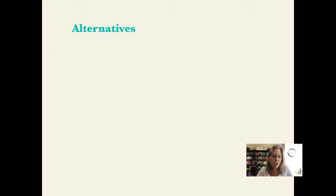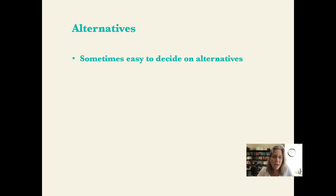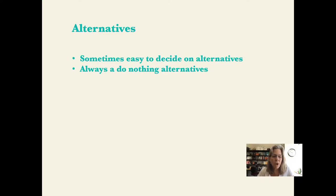When we're looking at alternatives, we have to really decide about how we're thinking about that. Sometimes it's easy to decide alternatives — you can just do this or this. We should always remember, though, that there is what's called a do-nothing alternative. So we can always say, well, we can do this, or this, or nothing. Oftentimes that's not really considered because we feel like we absolutely have to do something, but we need to think through that process — there's always a do-nothing option.